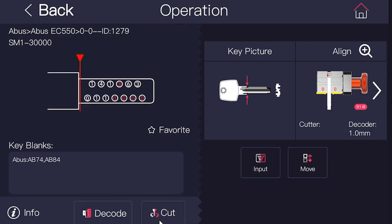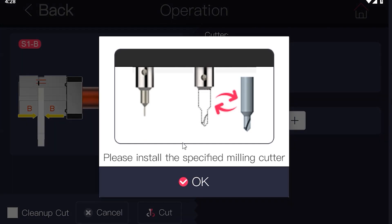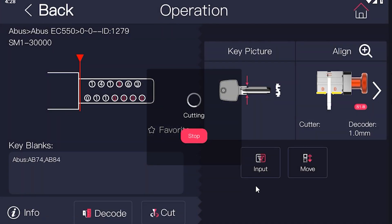Make sure the key is fixed flatly and the jaw is clean of shavings. Then click cut to start cutting the other side.